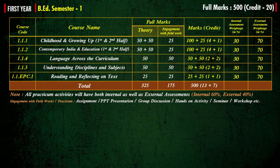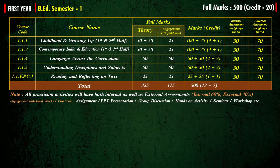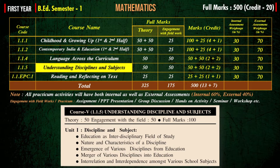In B.Ed Semester 1, full marks are 500. There are five courses. Course 1.1.1 is Childhood and Growing Up with two papers - first half and second half. Course 1.1.2 is Contemporary India and Education, also with two papers. Course 1.1.4 is Language Across the Curriculum. Course 5 is Understanding Disciplines and Subjects, and the last paper is EPC1 - Reading and Reflecting on Text.